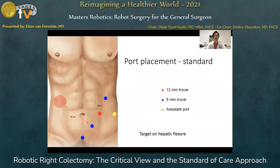Port placement is from the suprapubic area to the left hypochondrium with a target on the hepatic flexure. We need to keep in mind that we keep our distance from the target zone and we place the camera in port number two and the stapler trocar in port number three.